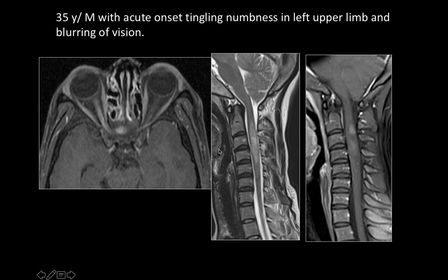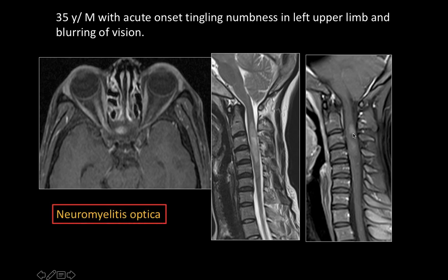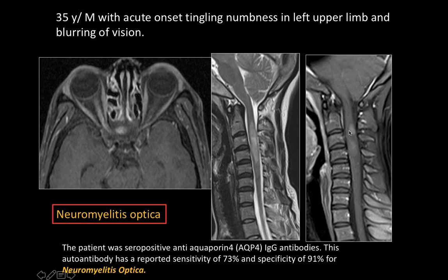This is a 35-year-old male with acute onset of tingling numbness in the left upper limb and blurring of vision. On post-contrast imaging we see enhancement of the intraorbital and intracanalicular segment of the right optic nerve, along with a long segment of demyelination involving the cervical cord. The cord is swollen with patchy enhancement. This is neuromyelitis optica — the patient was positive for anti-aquaporin-4 IgG antibody, which has a sensitivity of 73% and specificity of 91%. Neuromyelitis optica is more common in females than males.